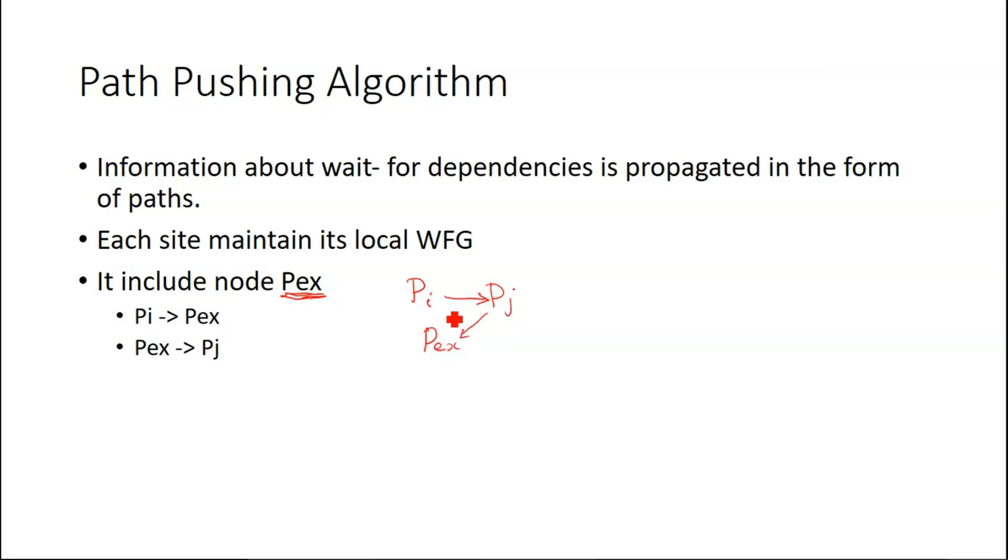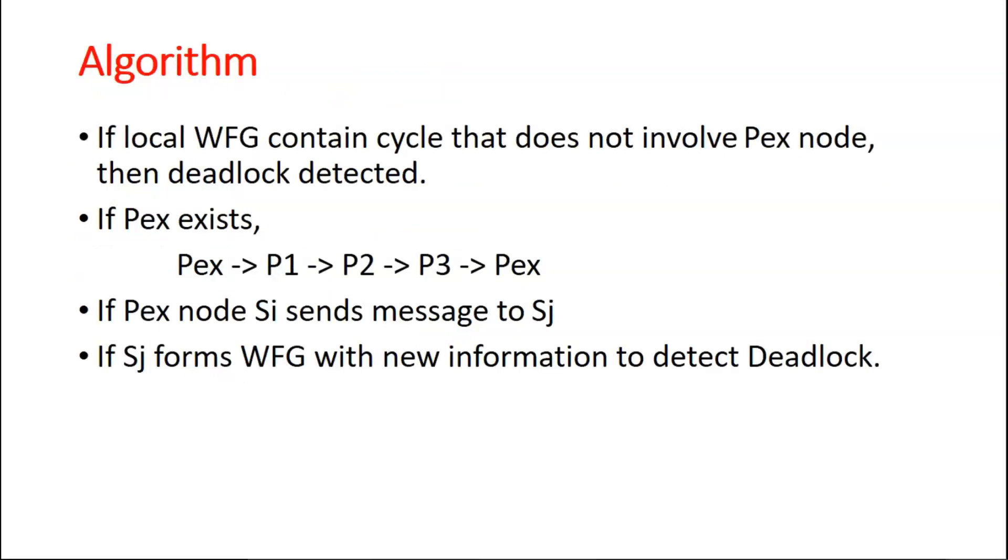So this is how actually, because this PEX, this resource is not available in the local site. It is somewhere else. That's why the local wait-for graph will contain PEX. So there are two terms. One is PI requesting PEX, a local process requesting an external resource. And here, PEX requesting PJ. That means a process at the external site requesting the local site's resource. So that's what the meaning of this notation and algorithm.